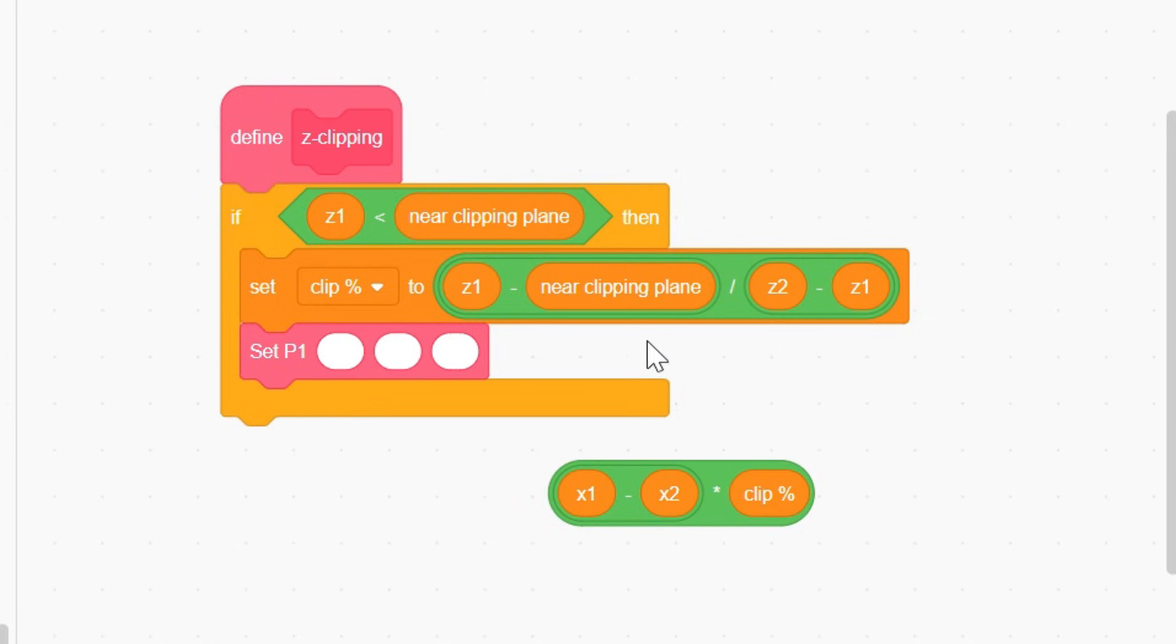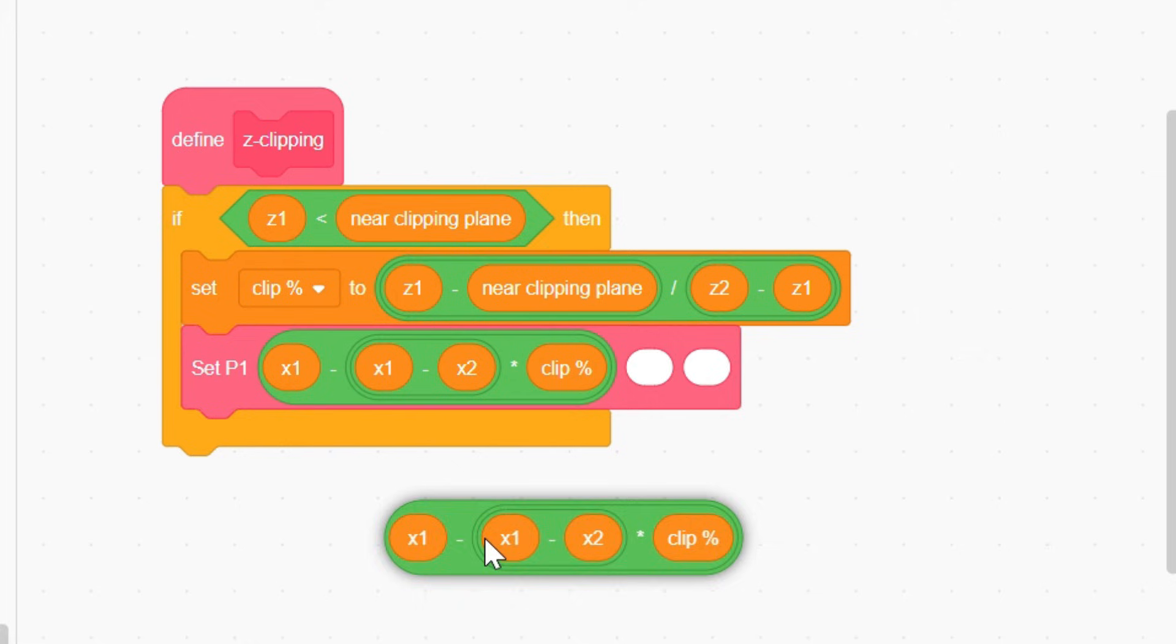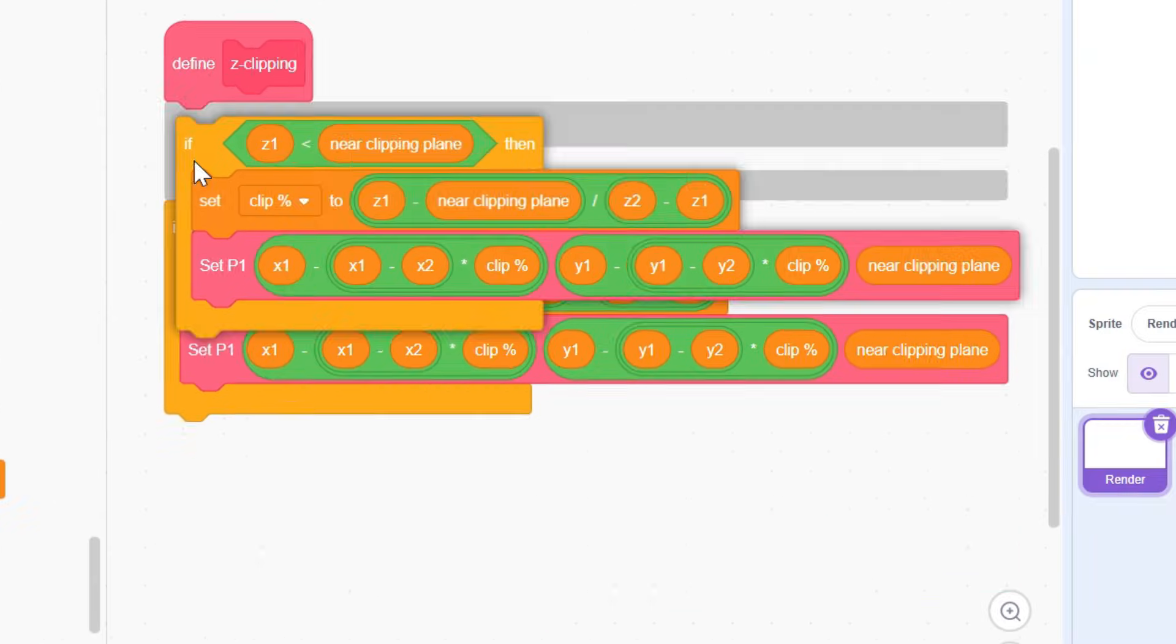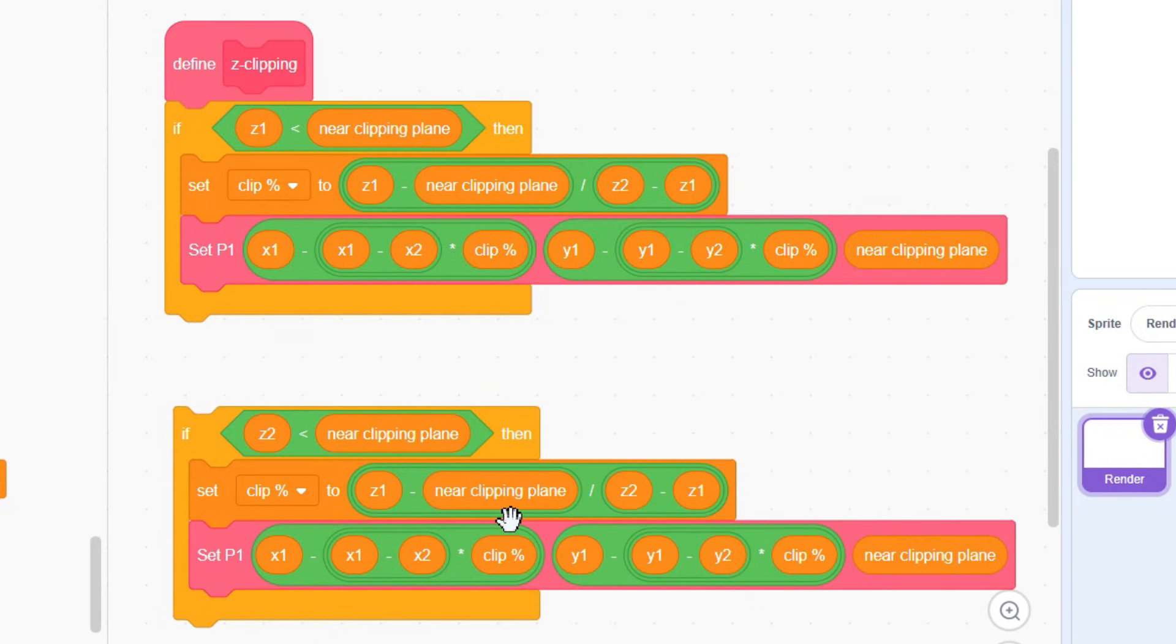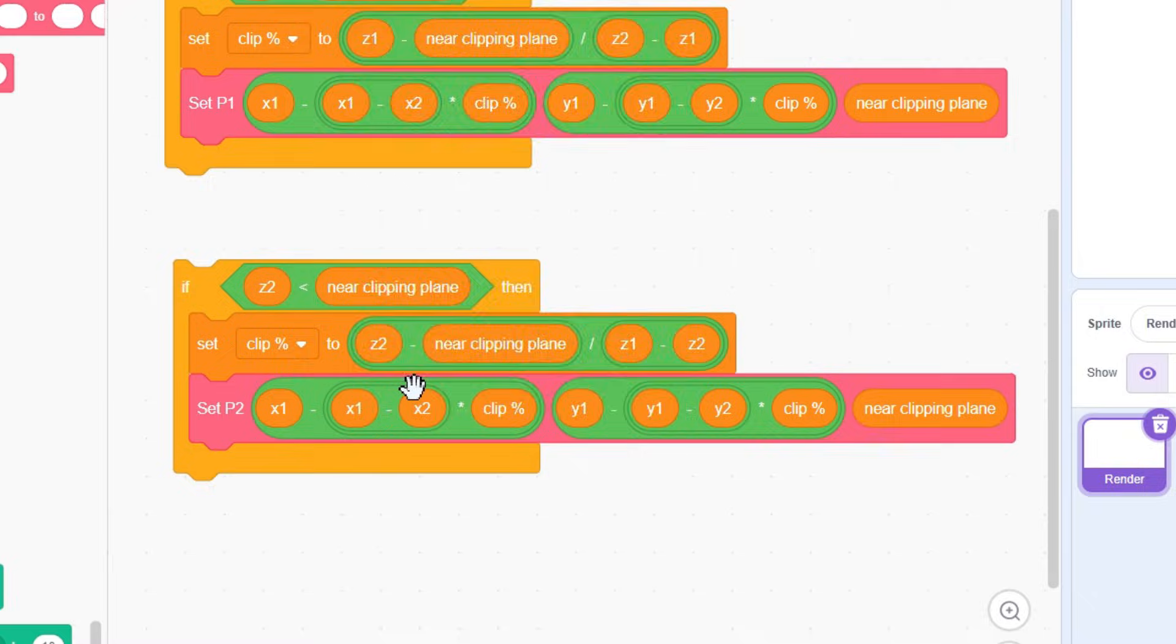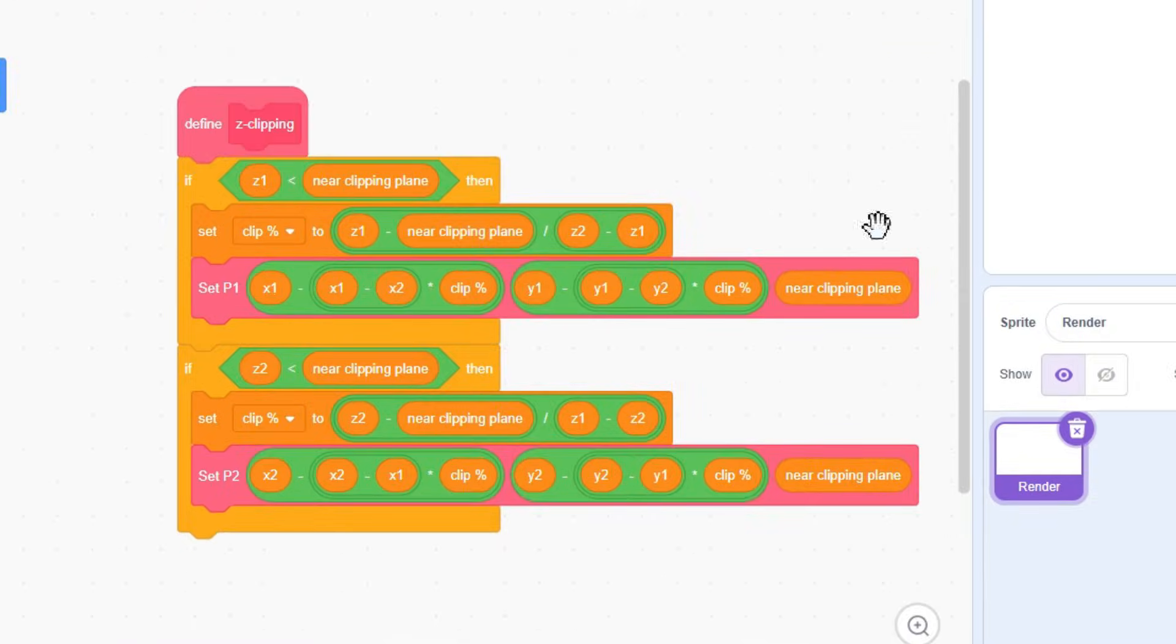So it's x1 minus x2 times clip percent, then just subtract the whole thing from x1 to get the new coordinates. Same thing for y, and for z is just the near clipping plane. Now there's another scenario, where z2 is less than the near clipping plane. So just copy this code, change it to p2, and flip all the variables.